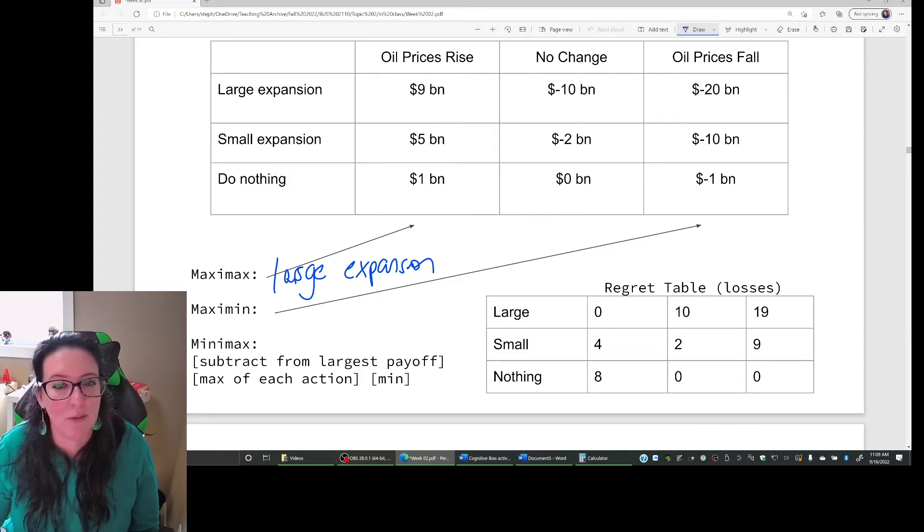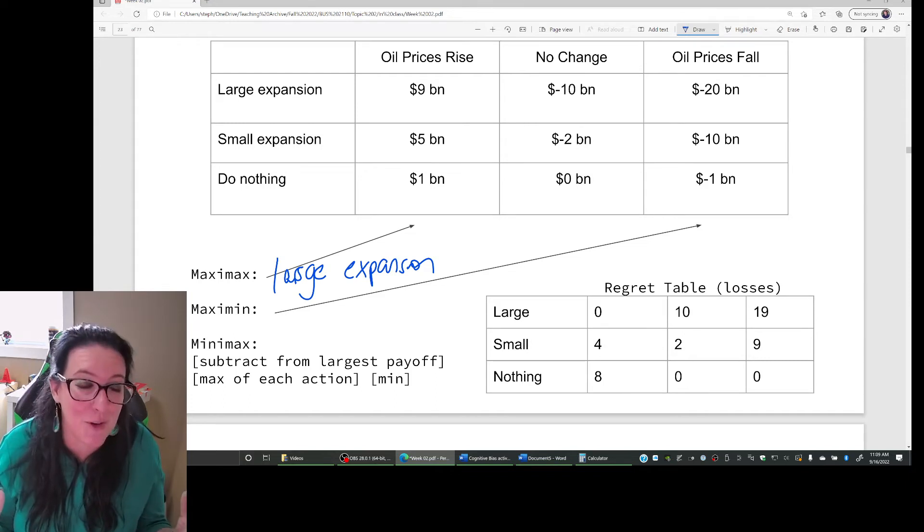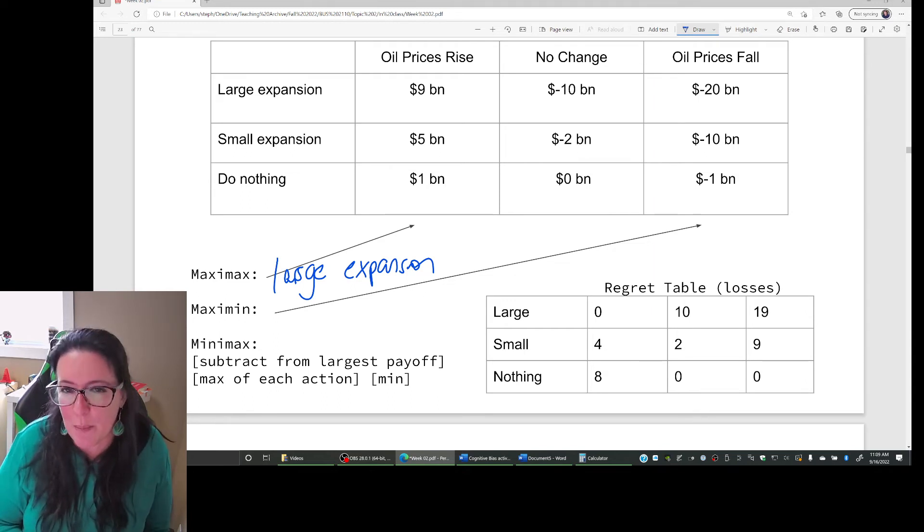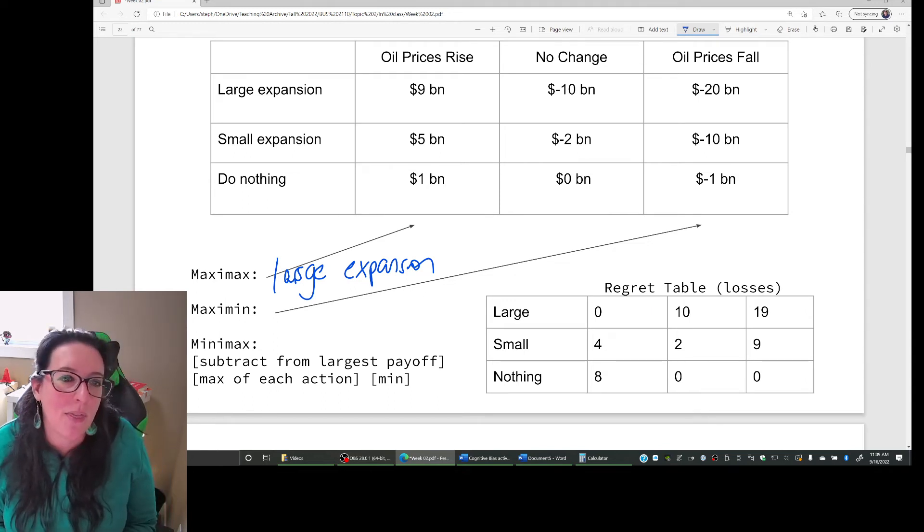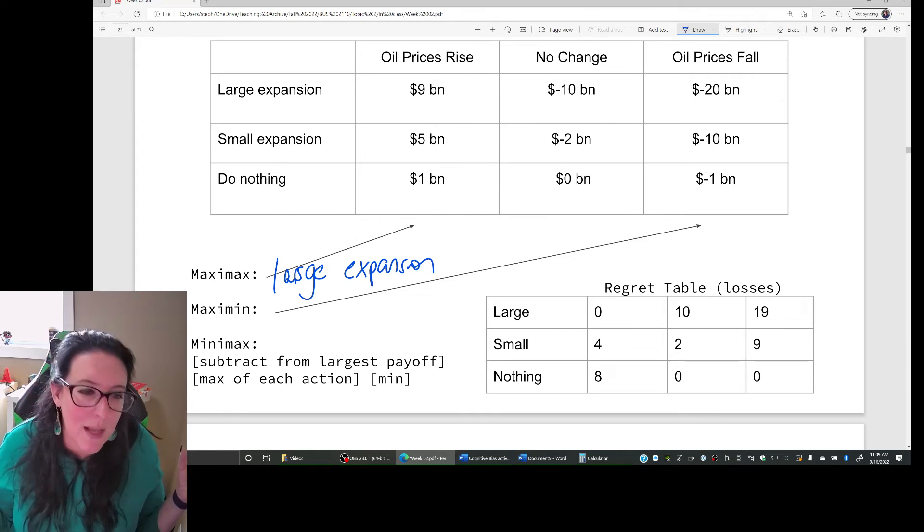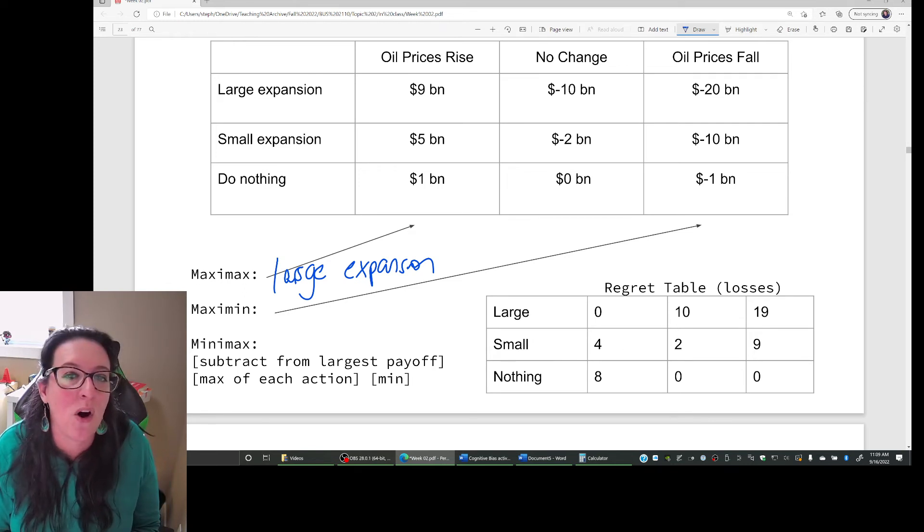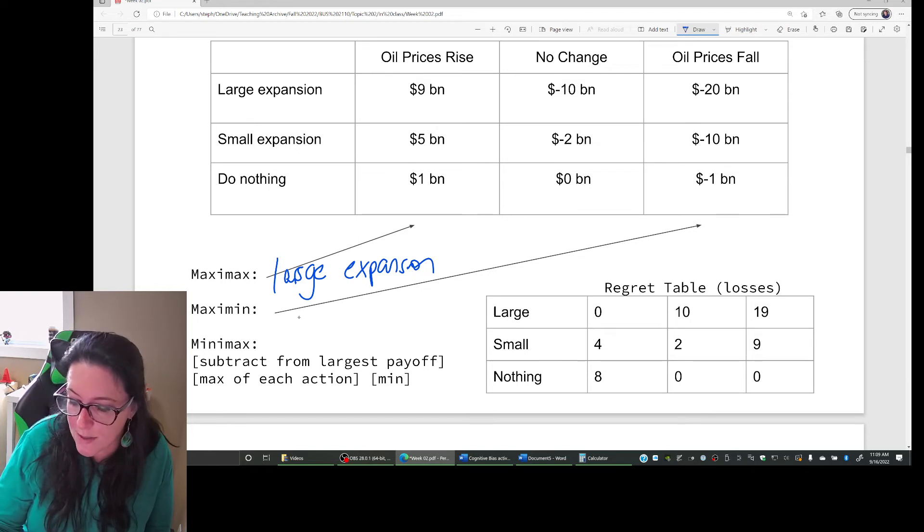Well, given the options here of large expansion that would lose us 20 billion because we have to build the infrastructure, but then prices fall and we can't really recoup that. Or small expansion, again, building the infrastructure, but not as expensive. We can't recoup it. We lose 10 billion. Or we can do nothing and we lose a billion because we're selling the same quantity but at a lower price. So in this case, in that pessimistic view, oil prices fall. The best outcome for us is to do nothing.